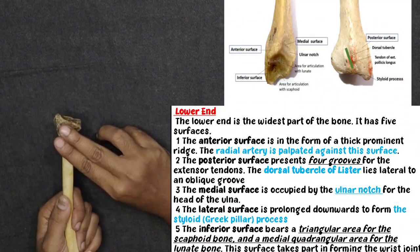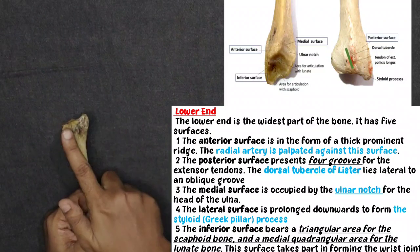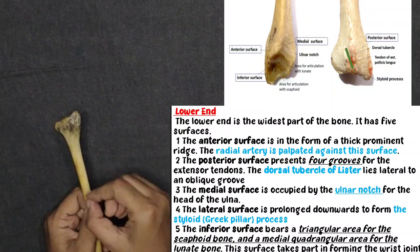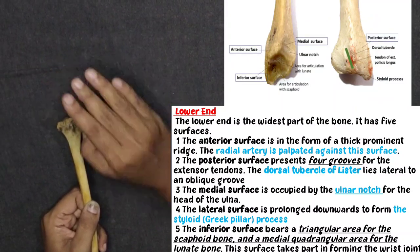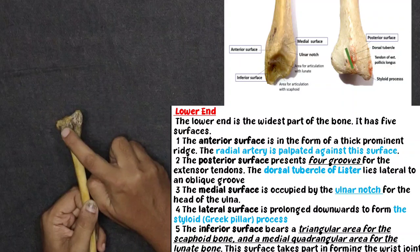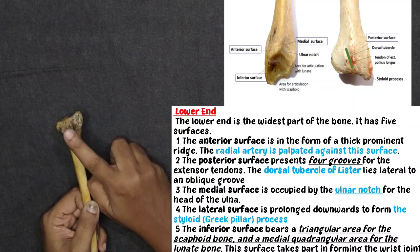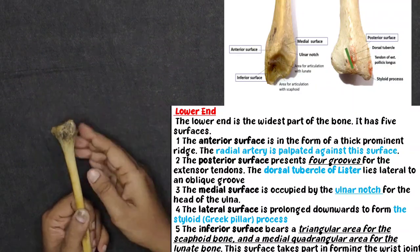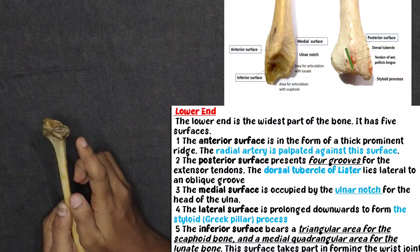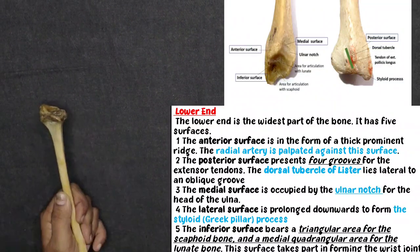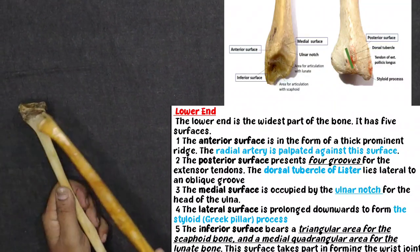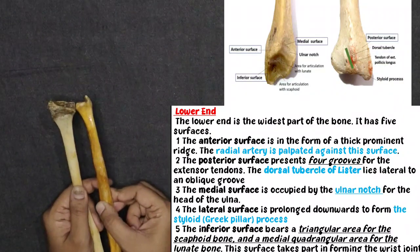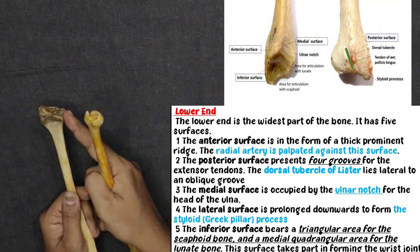The posterior surface of the lower end has 4 grooves, and the dorsal tubercle of Lister is present here. On the medial surface, there is a notch — at this level it is called the ulnar notch, where the lower end of the radius attaches to the ulna.